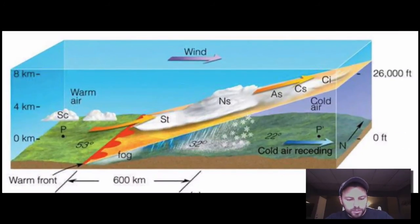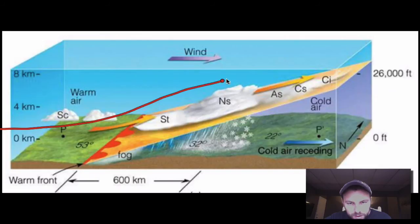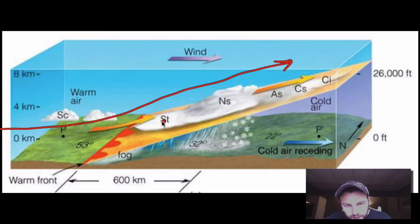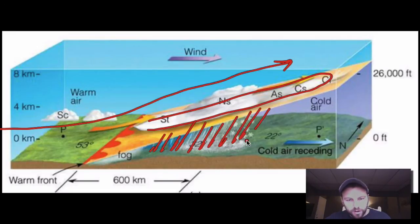Here's a nice diagram on our warm fronts. You can see the warm front right here — the air rides in and slowly goes up over the back of that cold air. Because it's slow over a period of time, we get these clouds that are drawn way out, and we see precipitation well ahead of the warm front.